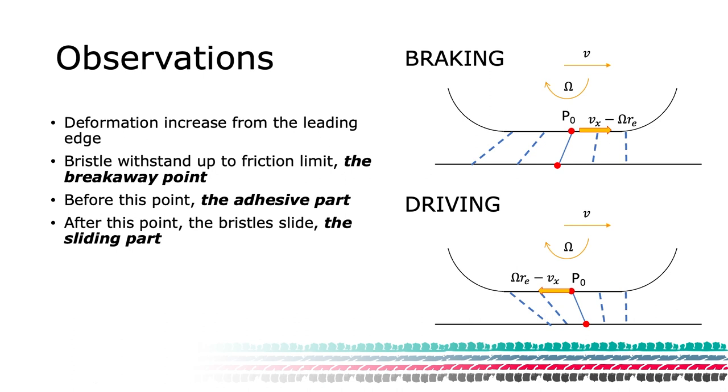This is a direct consequence of the fact that we assume some undeformed bristles at the inlet and the bristles travel at a different speed at the contact with the tire carcass and the ground. This holds true for both braking and propelling with a difference in direction of deformation. Also, observe that we are only considering the longitudinal direction yet.